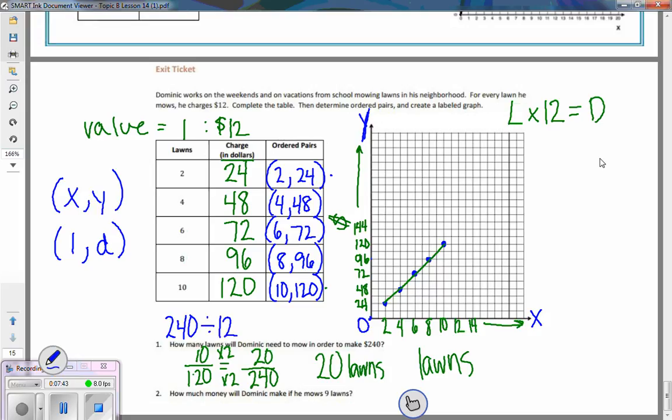240, well 24 divided by 12 is 2, and then I've got that zero I have to add back on. So there's a couple different ways mathematically that you can do it and get the same answer.